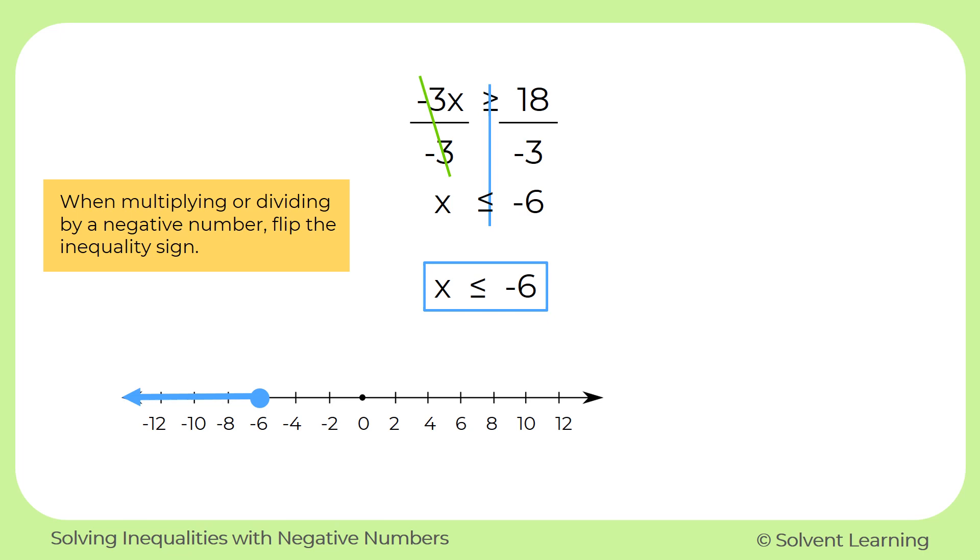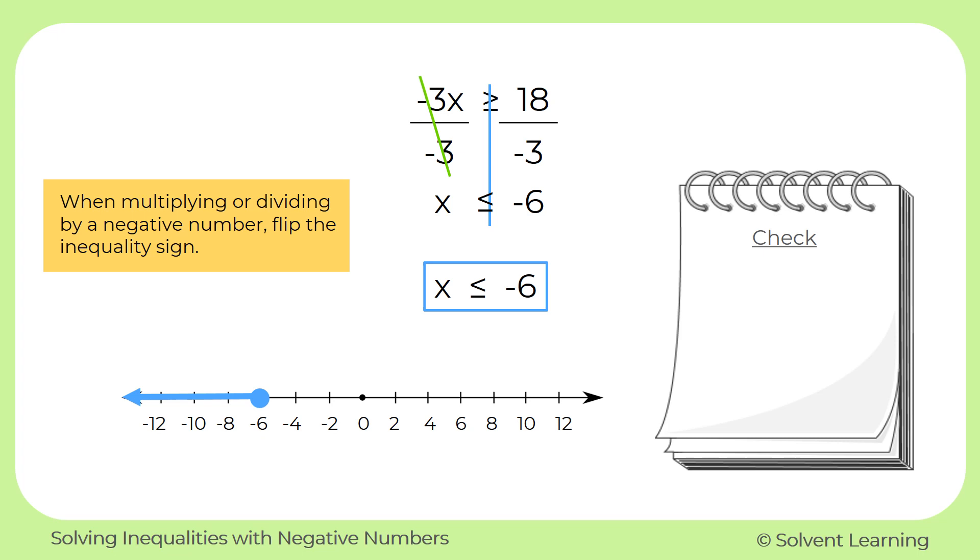And our last step is to check our answer. So we'll start off with our original inequality. And we'll need to figure out some number to substitute for x. And remember, we can choose any number that's less than or equal to negative 6. I'm going to choose negative 10. So by plugging negative 10 in for x, I have negative 3 times negative 10 is greater than or equal to 18.